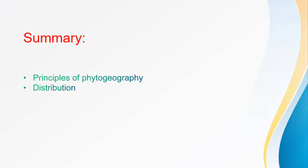In summary, what we covered in this session: the principles of phytogeography, and distribution of plants — including three types: continuous, discontinuous, and endemic distribution.